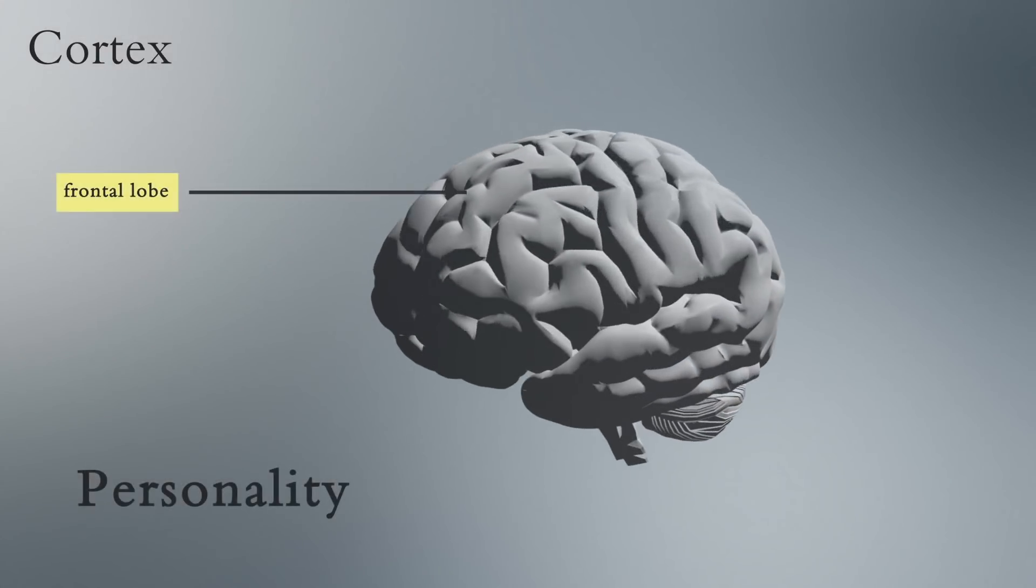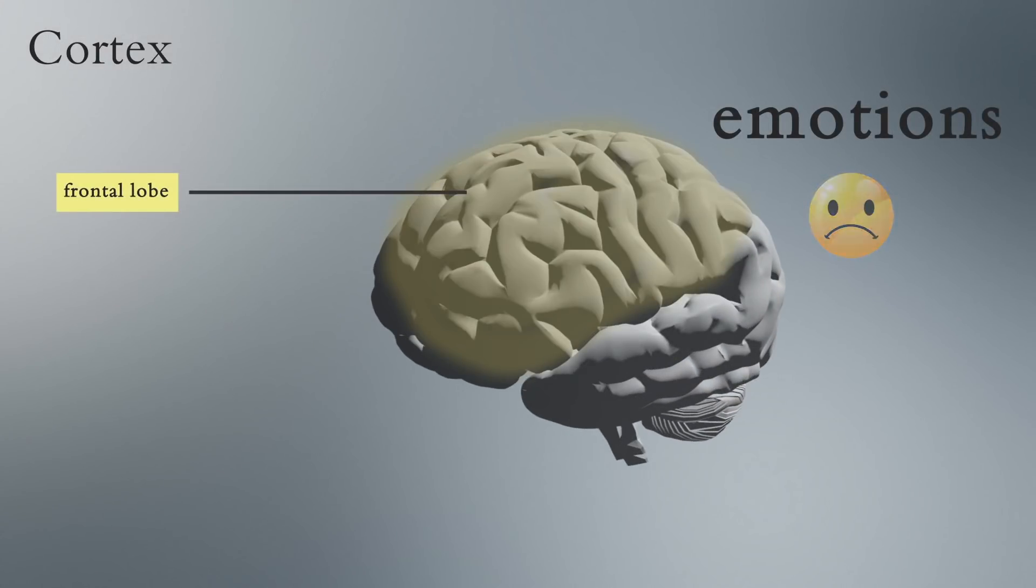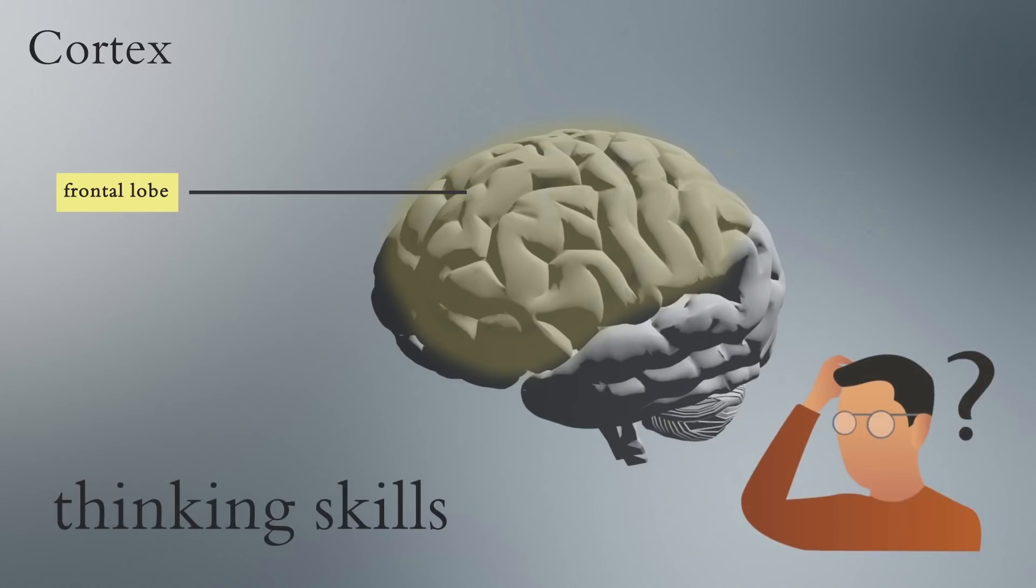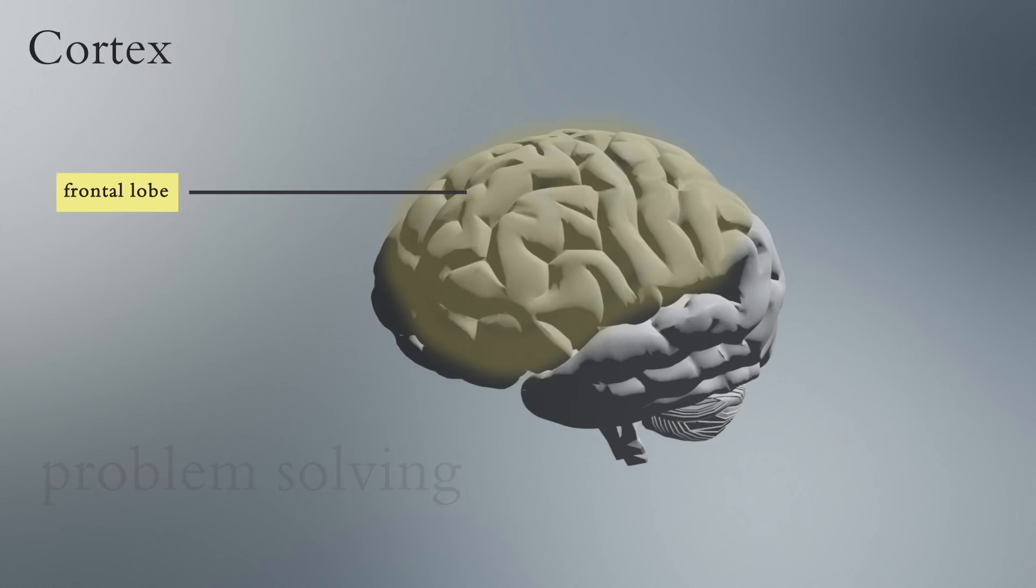The cortex is divided into four regions. The frontal lobe is for personality and emotions, higher thinking skills like problem-solving and controlling movement.